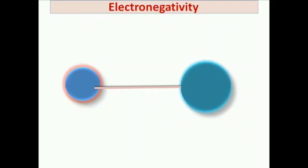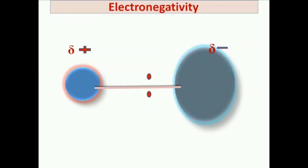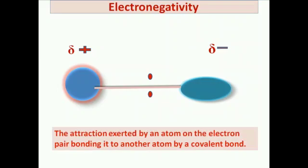The next periodic property is Electronegativity. Electronegativity refers to the ability of an atom to attract a shared electron pair toward itself when electrons are shared between two atoms in a covalent bond. It is the attraction exerted by an atom on the bonding electron pair in a covalent bond.